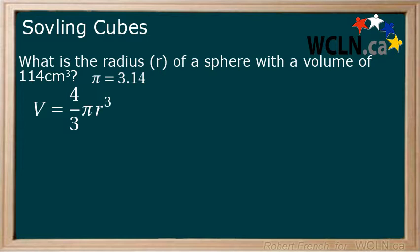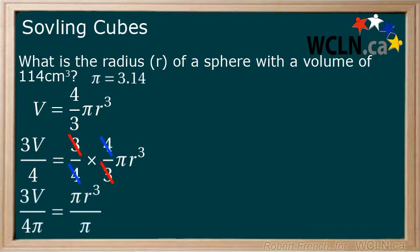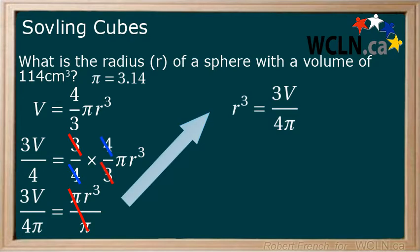In order to solve for r we will need to isolate it. First, multiply both sides by 3 and divide both sides by 4. Next, we will divide both sides by pi. This leaves us with r cubed.